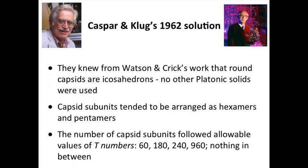In particular, two structural biologists, Casper and Klug, thought about this a long time, did a number of experiments, and they figured out the solution: how you build a round capsid from irregular proteins. They knew from Watson and Crick's work that these round capsids are actually icosahedrons, and it was never any other kind of platonic solid. It was always an icosahedron, which was very interesting.